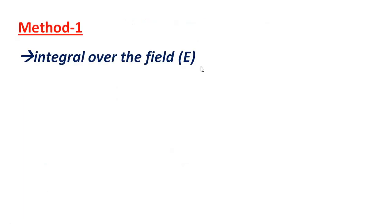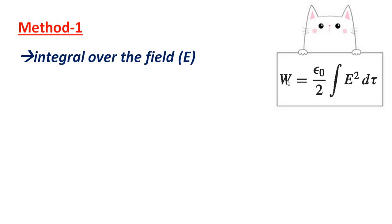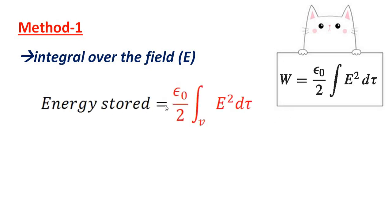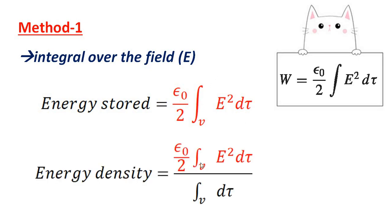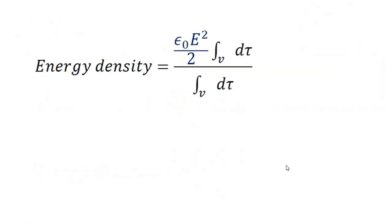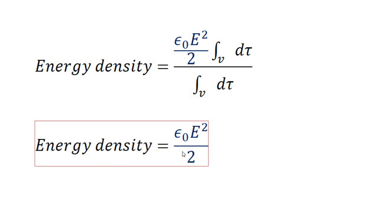Method 1: integral over the field. The energy equation is W equals ε₀/2 times the integral of E² dτ. Energy stored equals ε₀/2 times the volume integral of E² dτ. Energy density means energy stored per unit volume, so we divide by volume: energy density equals ε₀E²/2. This is the first method.